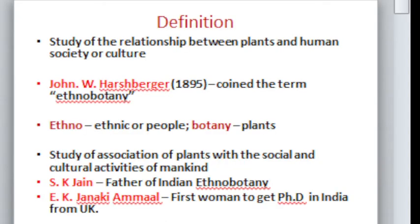Ethnobotany is the study of the relationship between plants and human society or culture. The term ethnobotany was first coined by John W. Herschberger in 1895. If you split the word ethnobotany into two, 'ethno' means ethnic or people and 'botany' means plants. So it is a study of the association of plants with the social and cultural activities of mankind.